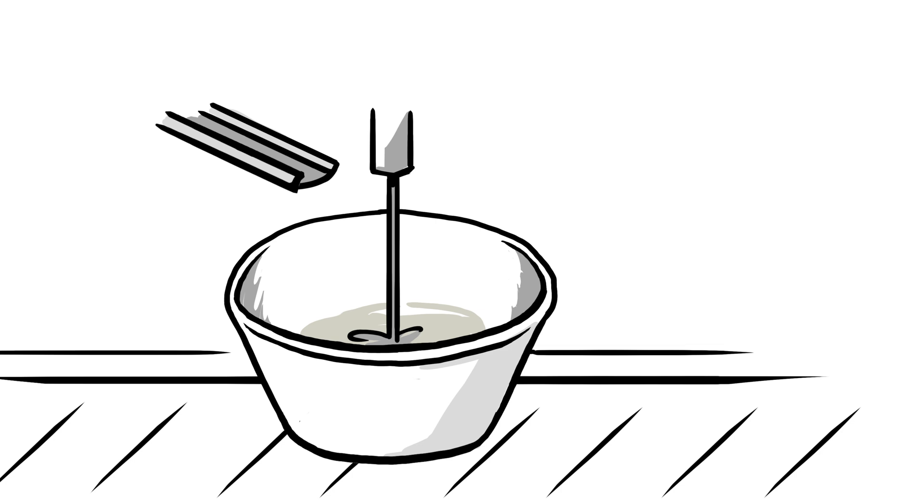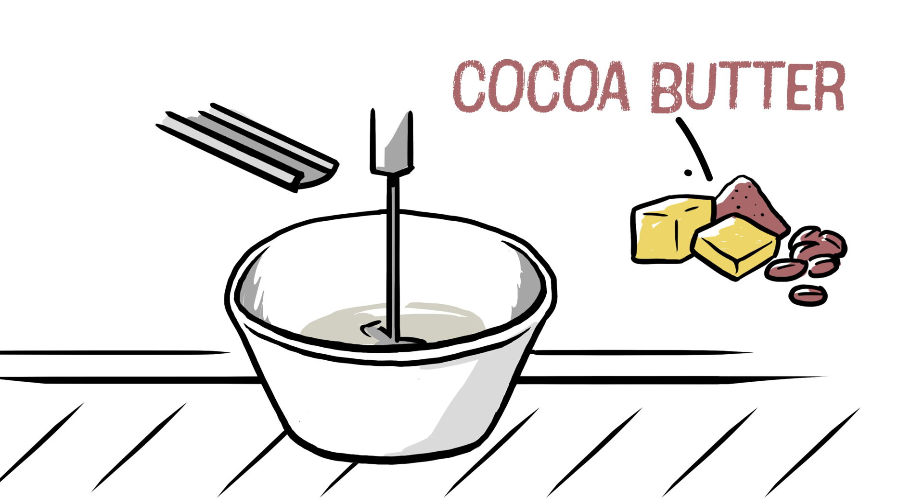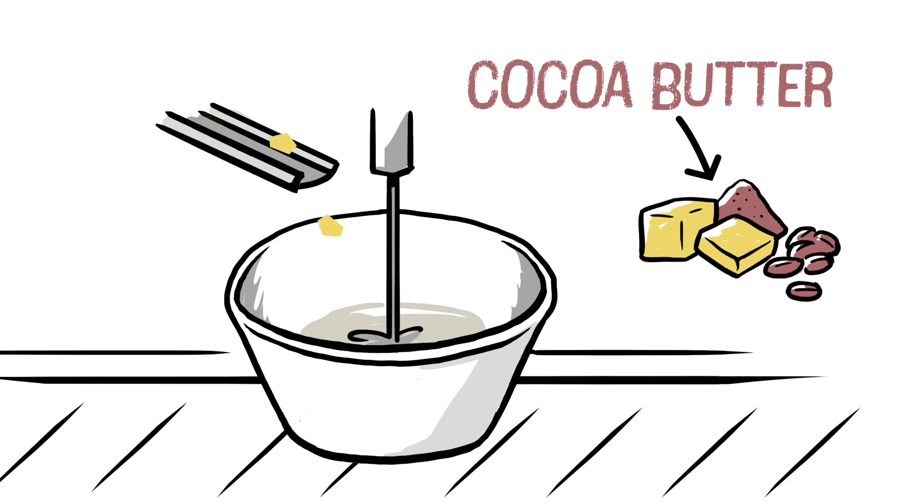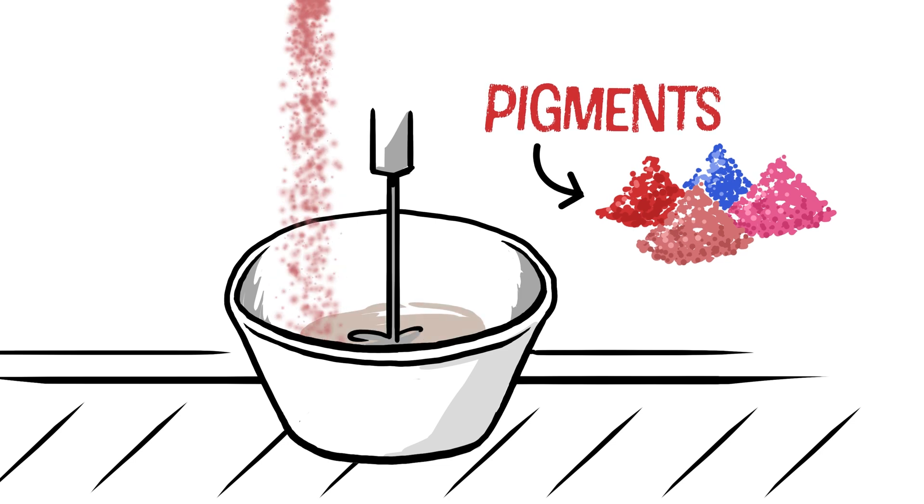Then, they mix in oils, like castor oil, super shiny, or cocoa butter, super creamy, to help it glide on smoothly. After that, they toss in the pigments. Those are the colorful powders that bring your favorite shades to life.